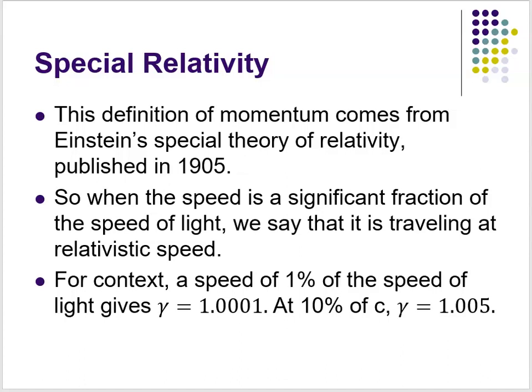To place this in context: if you solve for gamma going at 1% of the speed of light — which is 3 × 10⁶ m/s, really super fast compared to everyday speeds — gamma is only 1.0001. So you'd only be off by 0.01% if you used the classical definition of momentum. At 10% of the speed of light, 3 × 10⁷ m/s, gamma goes to 1.005, so you're still really, really close.